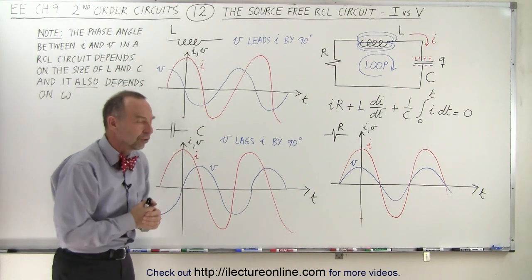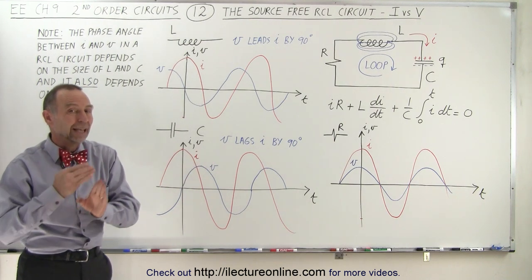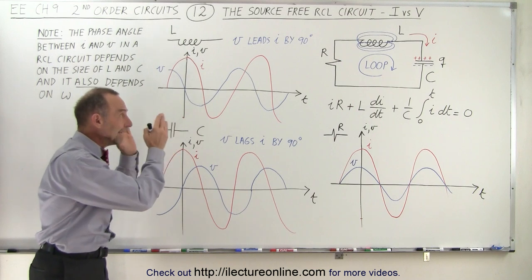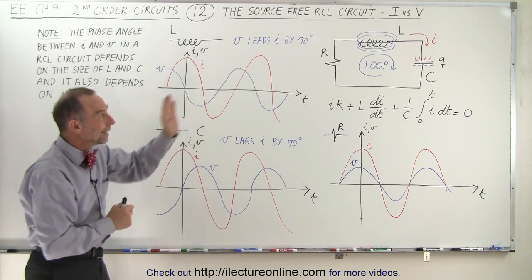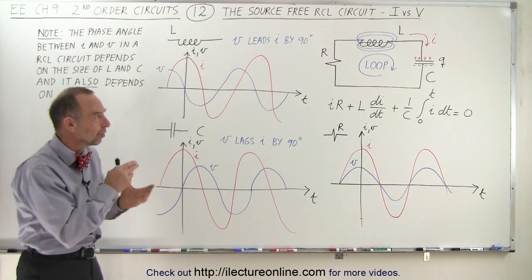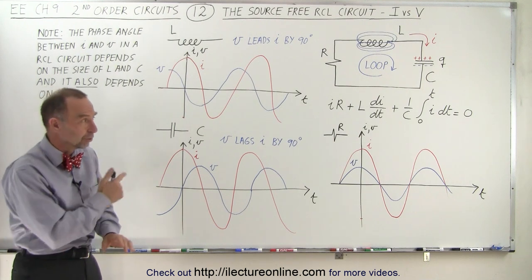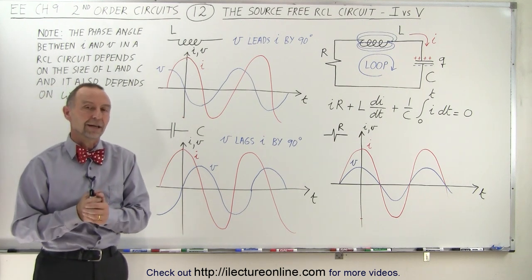So here we have a good overview of each individual component and the phase differences between the current and the voltage before we now take a look at each individual component inside the RCL circuit to see how it actually operates as far as the polarity of the voltage depending upon what's happening with the current. So stay tuned and we'll get into the details of that now.